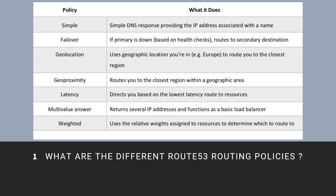Simple policy: simple DNS response providing the IP address associated with a name. Failover policy: if primary is down, routes to secondary destination.